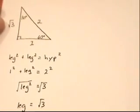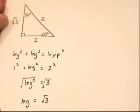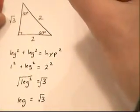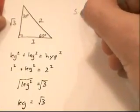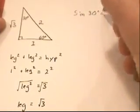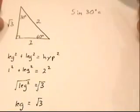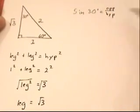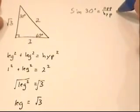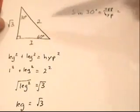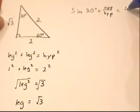Now we're ready to take the sine, cosine, and tangent of 30 degrees and 60 degrees. We'll start with 30 degrees. Sine of 30 degrees — remember sine is opposite over hypotenuse. For the 30-degree angle, the opposite side is 1 and the hypotenuse is 2, so sine of 30 degrees is 1/2.